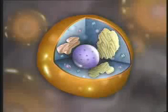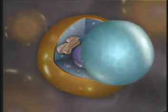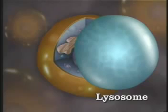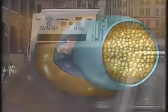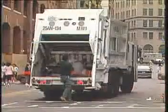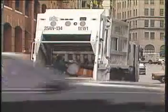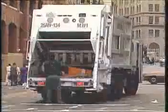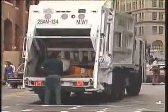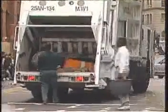Before particles of food can be burned in mitochondria, they are first processed by other organelles called lysosomes. These contain chemicals called enzymes that digest small food particles that have passed into the cell. Lysosomes are also the garbage disposal units of the cell — they break down worn-out cell parts and gather waste products from the cell's cytoplasm.